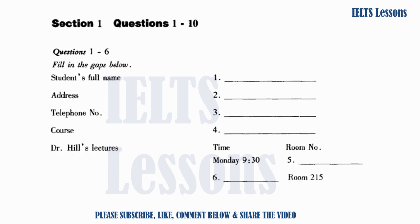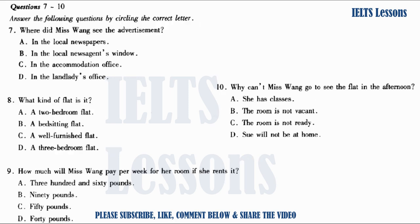Pearl wants to find accommodation near her school. She saw an advertisement in the local newsagents and telephoned immediately. As you listen to her phone call, answer the questions by circling the correct letter. First, look at questions 7 to 10.